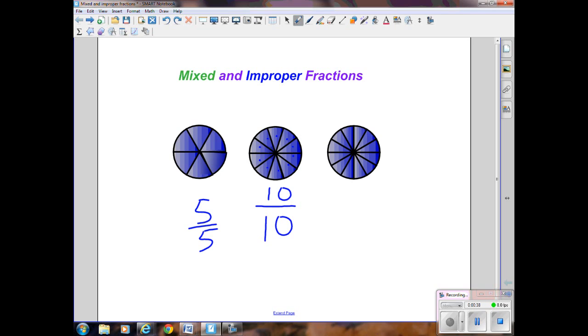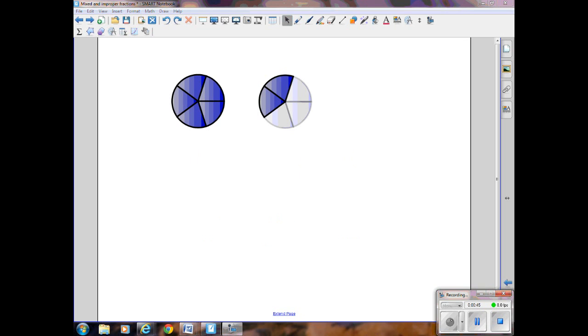And in the last circle we have eleven parts, we say we have eleven-elevenths. We use improper and mixed fractions to express more than one whole.